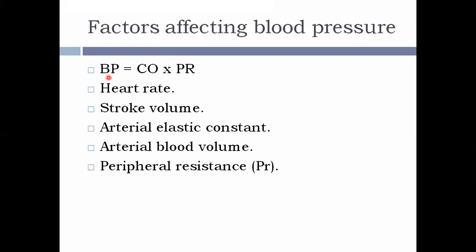Factors that affect cardiac output: any change in cardiac output is seen more in the systolic blood pressure than in the diastolic blood pressure. The first factor is heart rate. An increase in heart rate leads to an increase in cardiac output, which ultimately causes an increase in blood pressure. Decrease in heart rate decreases cardiac output and decreases blood pressure. An increase in heart rate leads to increased systolic blood pressure more than diastolic, because cardiac output is the main factor affected.